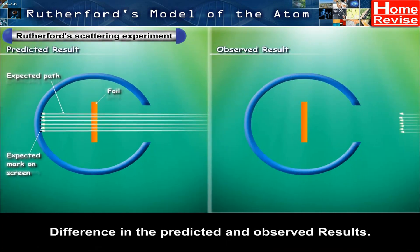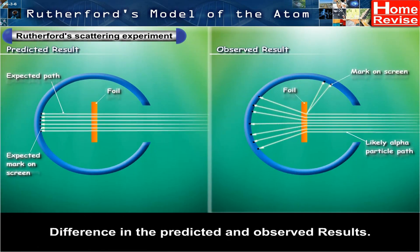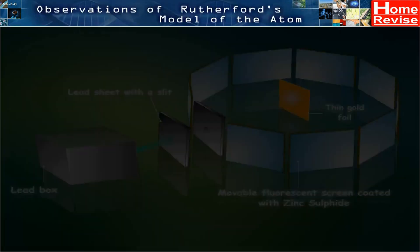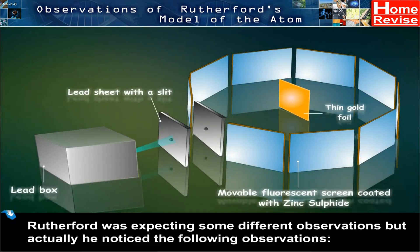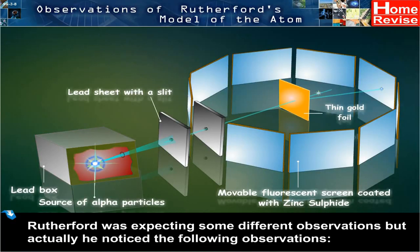Difference in the predicted and observed results. Observations of Rutherford's Model of the Atom. Rutherford was expecting some different observations, but actually he noticed the following observations.